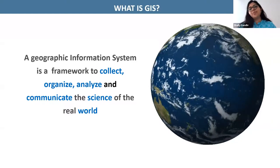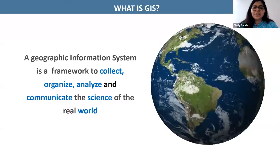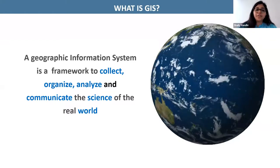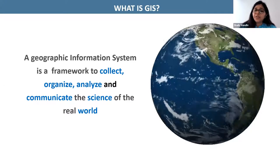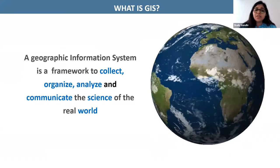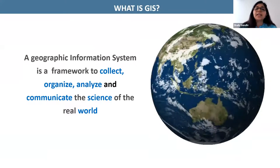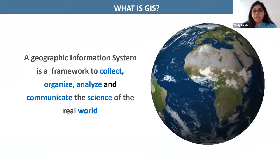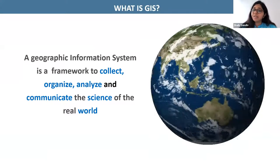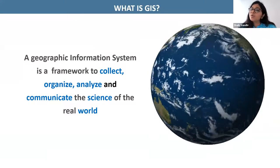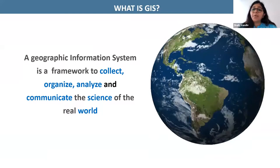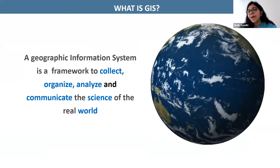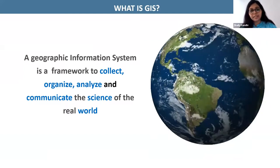This is the most basic slide talking about what is GIS. As we all know, Geographic Information System is a framework to collect, organize, analyze, and communicate the science of the real world. Nowadays, this definition has also gone a little beyond, talking about data analytics and looking at the patterns from the massive data which is being collected.